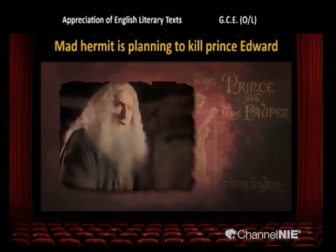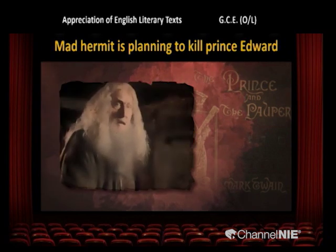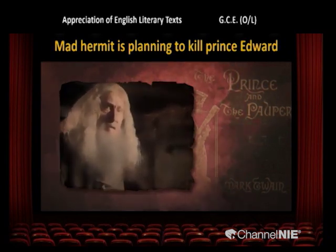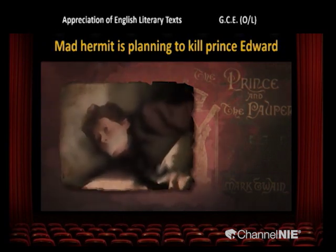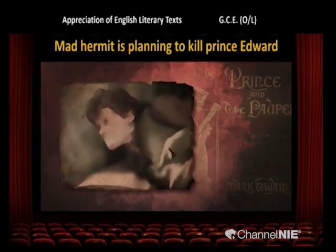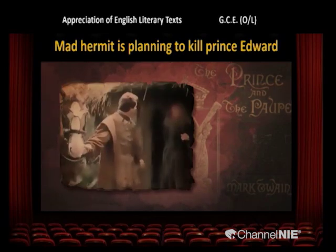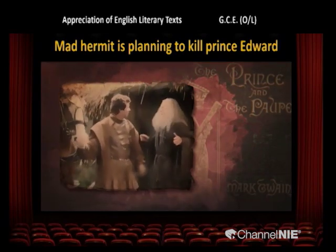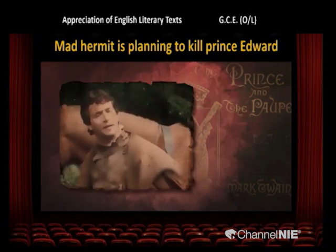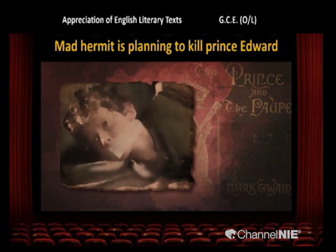[Video clip] Mad Hermit: "Edward of England, son of Henry VIII — have you prayed? Then pray now. Pray the prayer of the dying." [A visitor knocks] "Hello? Is anyone there?" Visitor: "Forgive me, Father. Have I disturbed your devotions?" Hermit: "Not exactly, no. If I can be of service?" Visitor: "I seek a boy who came this way — fair, poorly dressed, of the common sort. Have you seen him?" Hermit: "I have." Were you able to hear how that mad hermit was sharpening his knife to kill the prince?